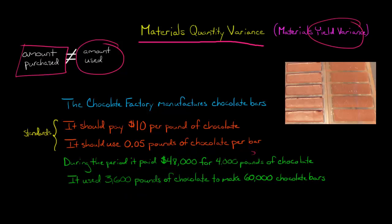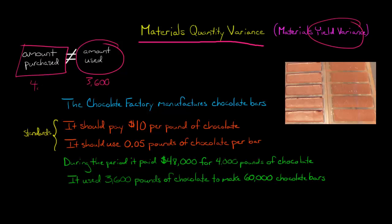Notice they bought 4,000 pounds but they used 3,600 pounds, so it's not the same. The amount used is 3,600 and the amount purchased is 4,000.